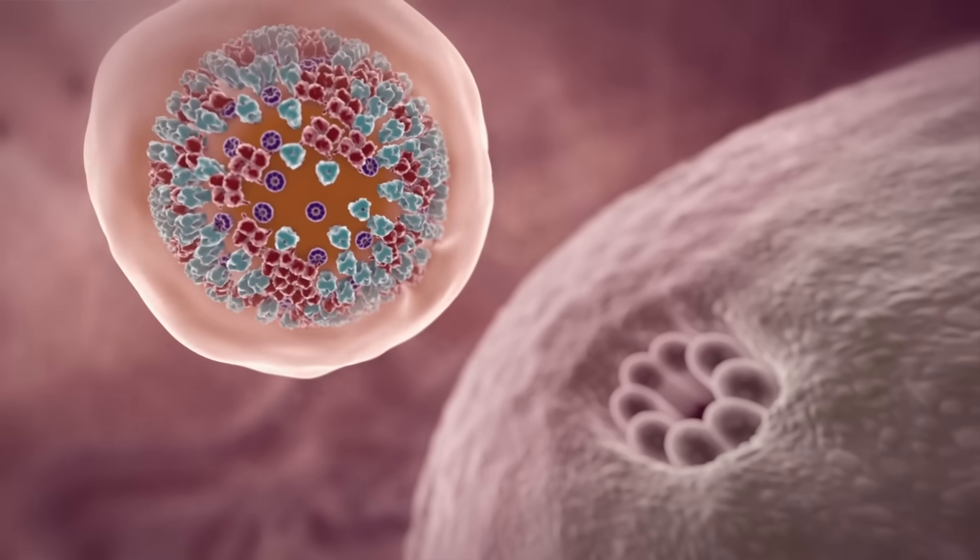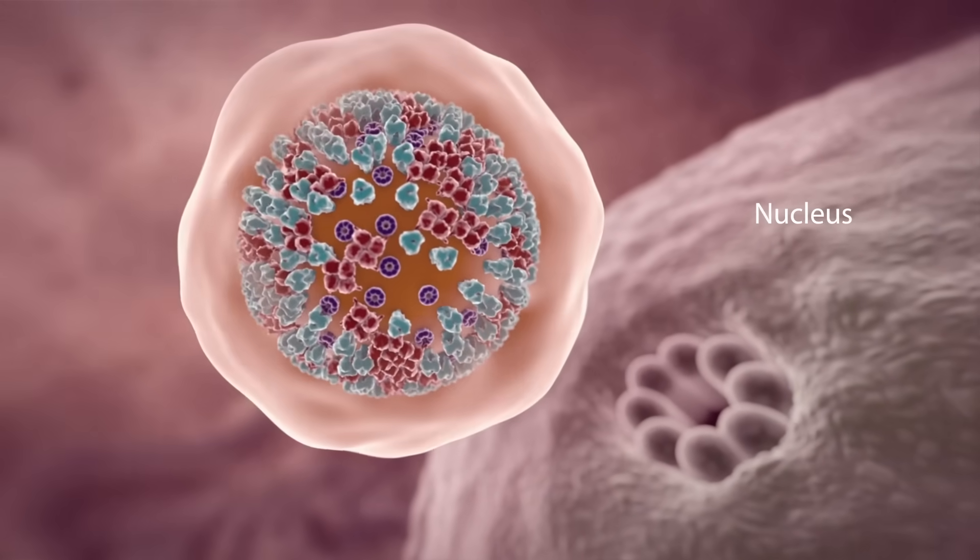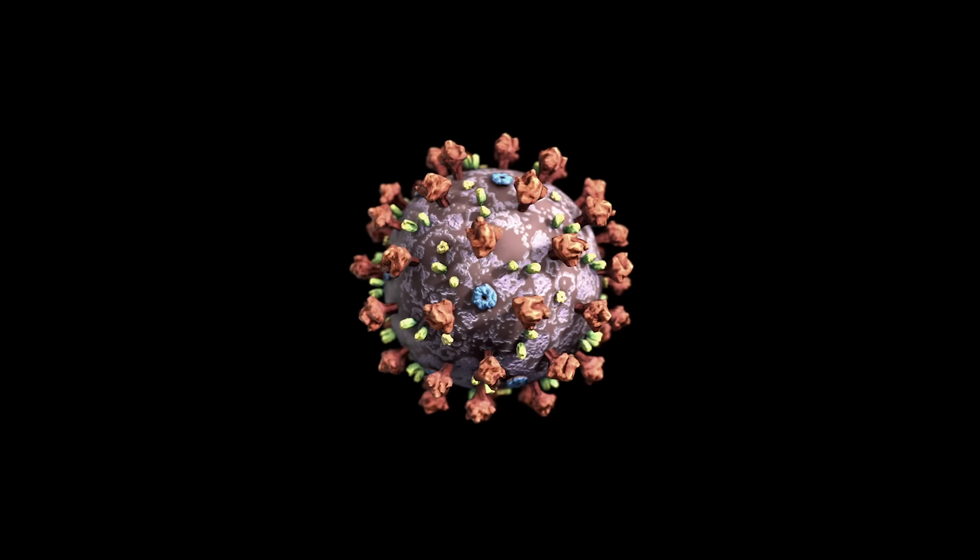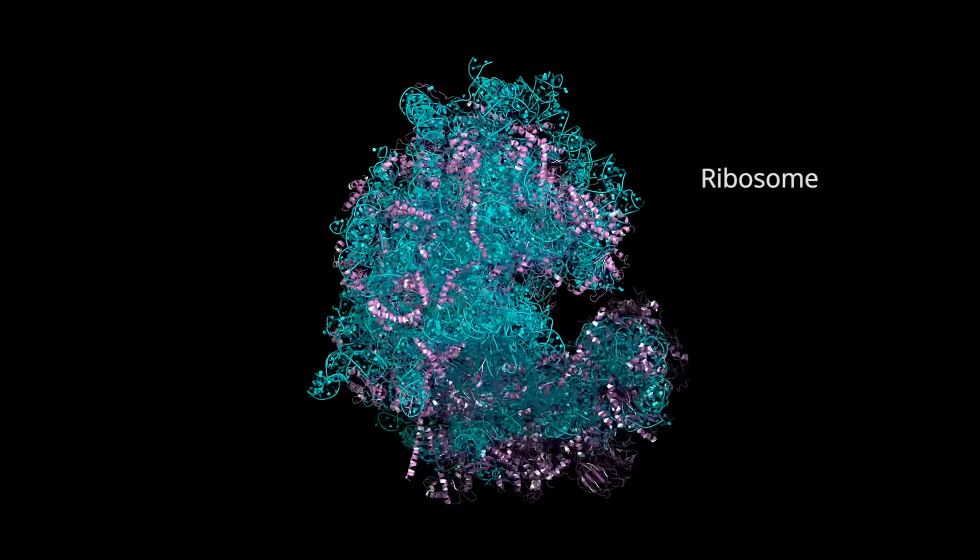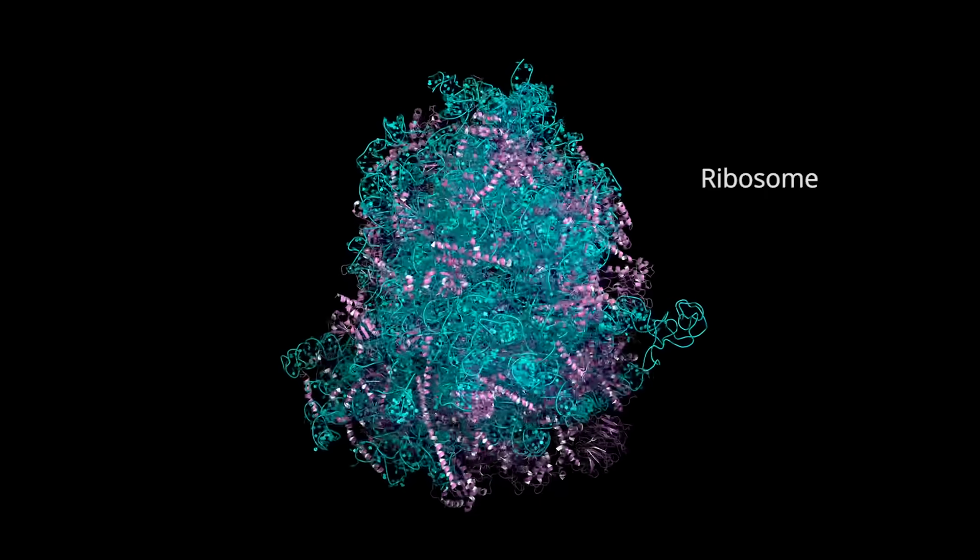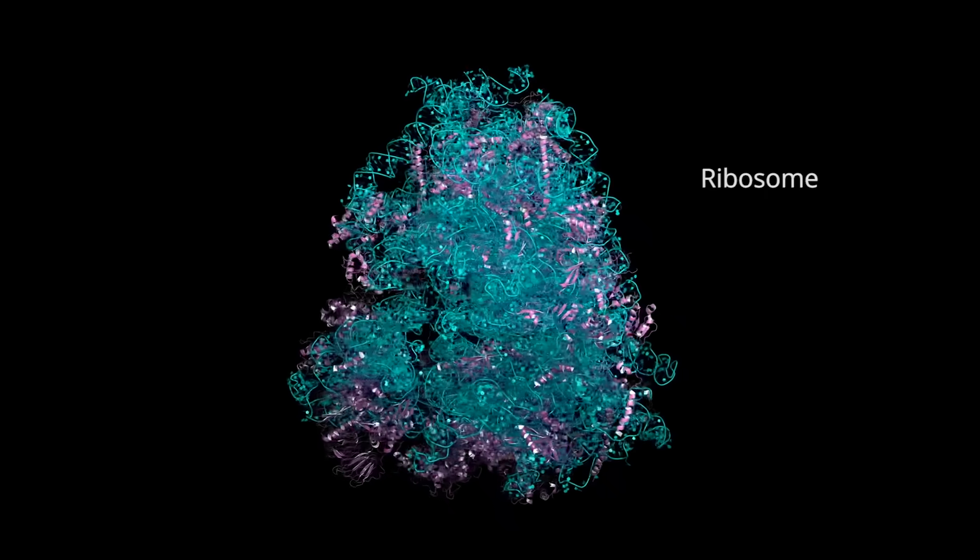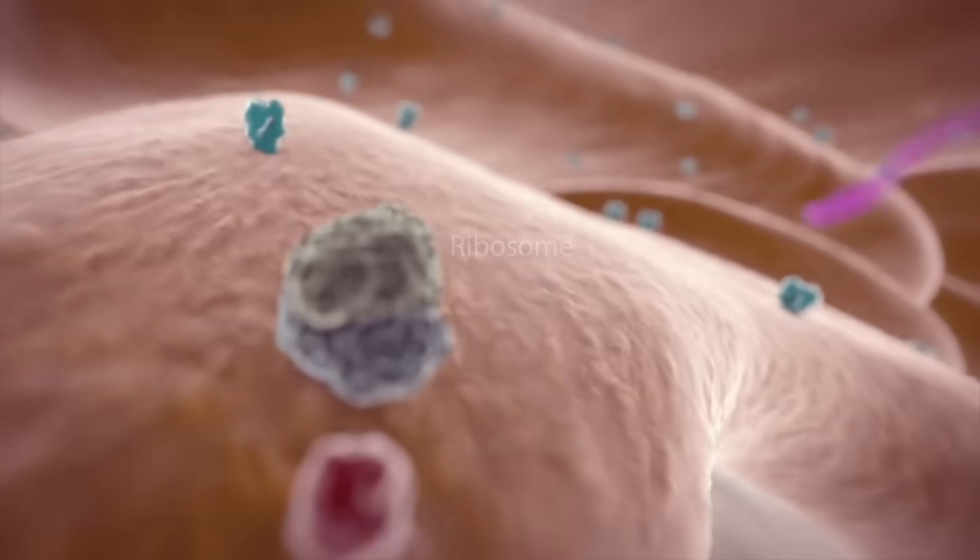A typical flu virus would travel inside a sac made from your cell membrane to your cell's nucleus that houses all its genetic material. The coronavirus, on the other hand, doesn't need to enter the host cell nucleus. It can directly access parts of the host cell called ribosomes. Ribosomes use genetic information from the virus to make viral proteins such as the spikes on the virus's surface.